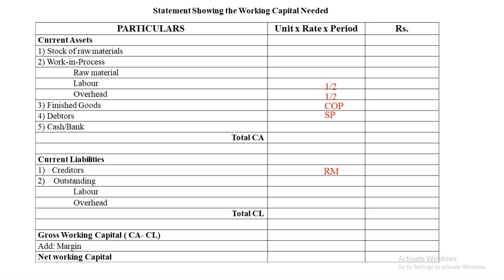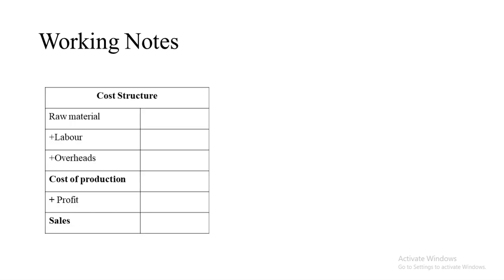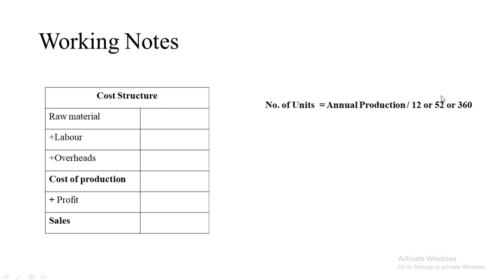After noting the format, you create two working notes. Working Note 1 is a cost structure: Raw Material + Labor + Overhead = Cost of Production; add Profit to get Sales. All rates are taken from this table. Working Note 2 gives the number of units: Annual Production ÷ 12 (monthly), ÷ 52 (weekly), or ÷ 360 (daily), depending on the question.